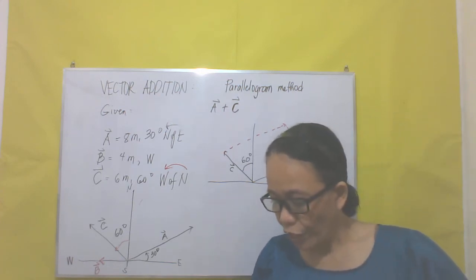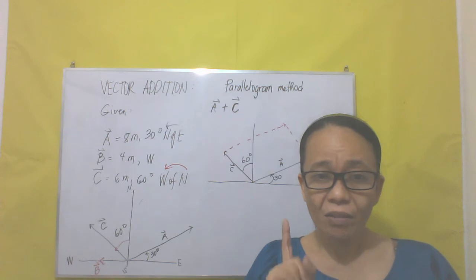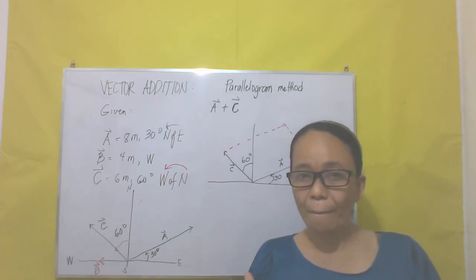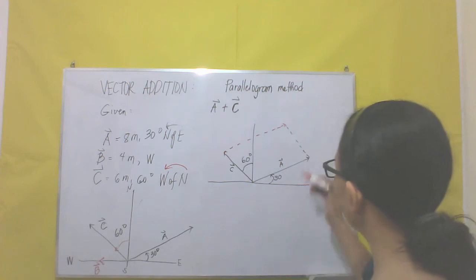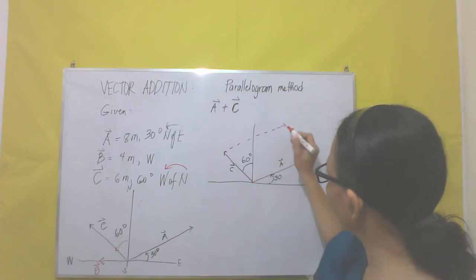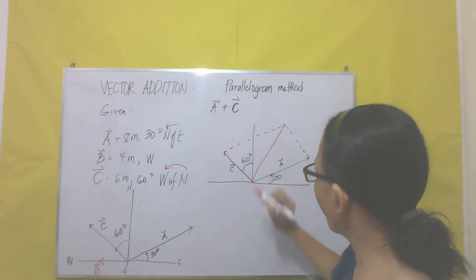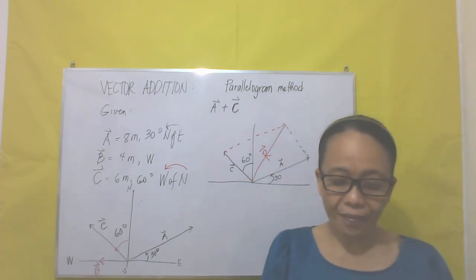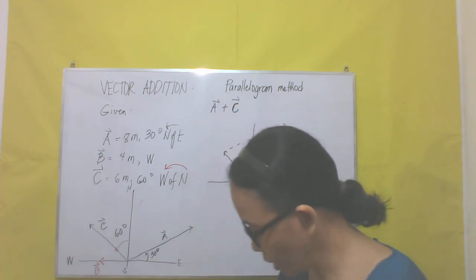To find the resultant vector, you are going to draw a diagonal line. The diagonal line indicates the resultant, or the sum of vector A plus vector C. The diagonal line goes from the point of origin to the opposite vertex, and this is our resultant vector R.